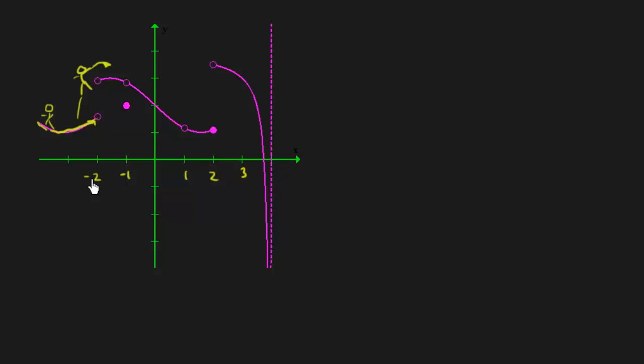So at x equals negative 2 we have a discontinuity, and you have to give a reason. So we'll say because there's actually two reasons, or two of the requirements for continuity that we violated.